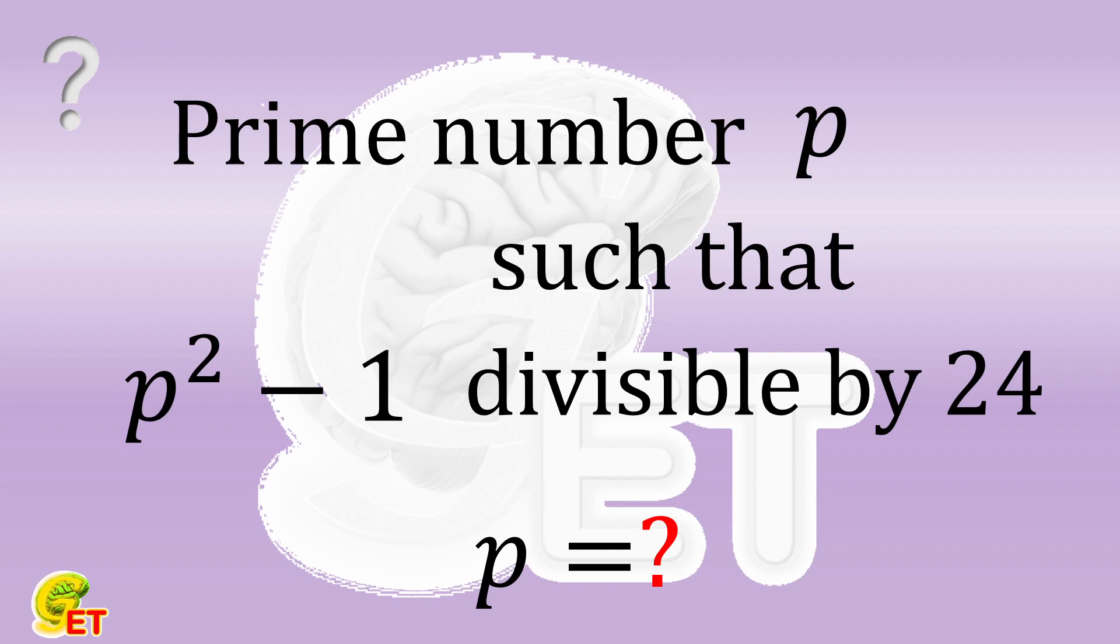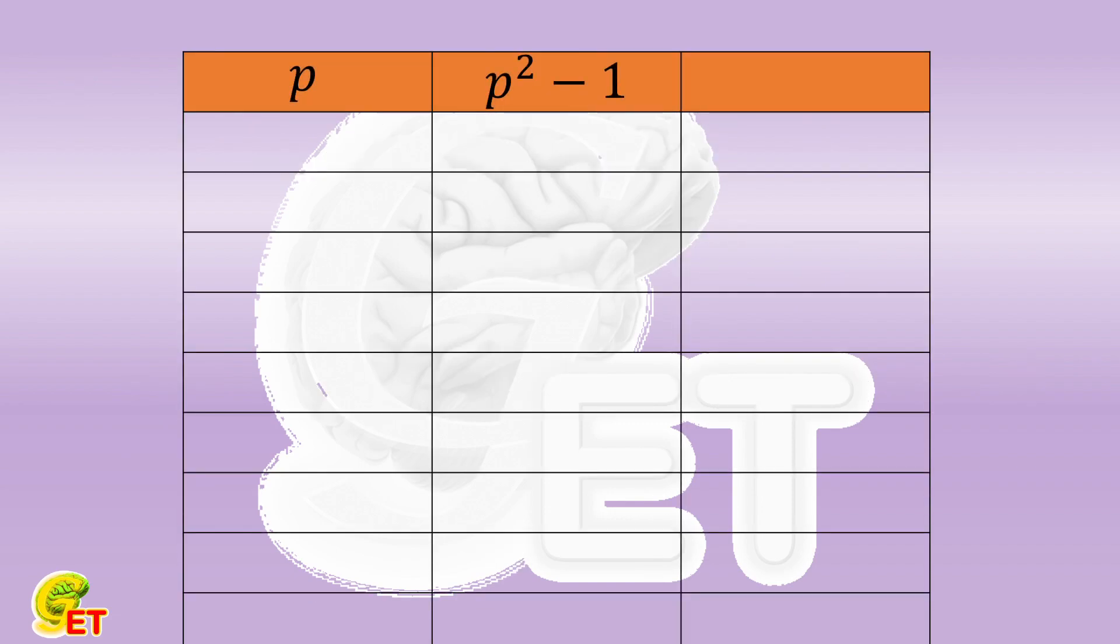If it is not easy, let's first list several prime numbers p and check it out. 2 and 3 obviously don't work. When p is equal to 5, the square of p minus 1 equals 24, it works.